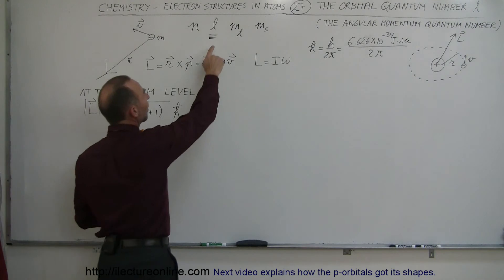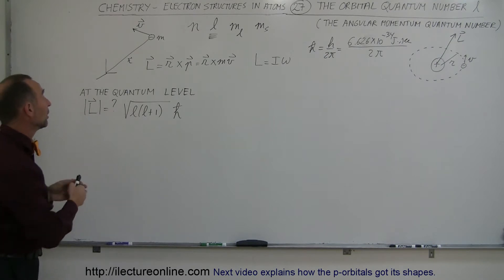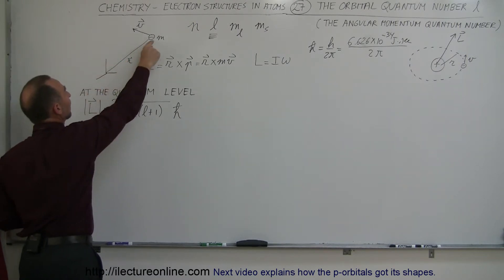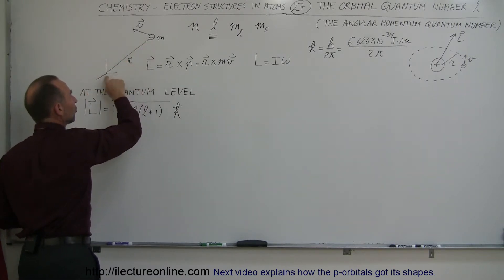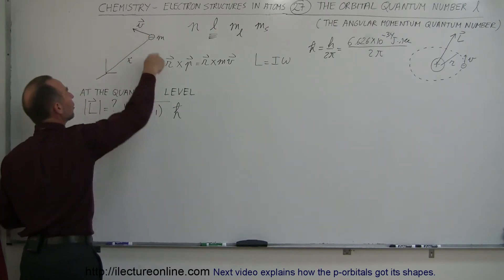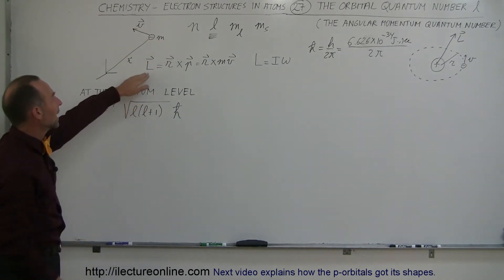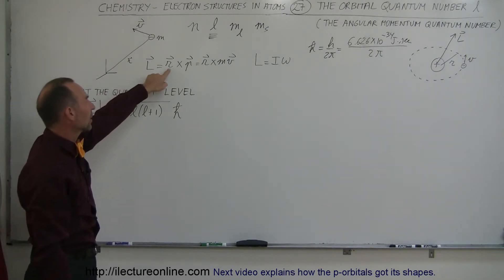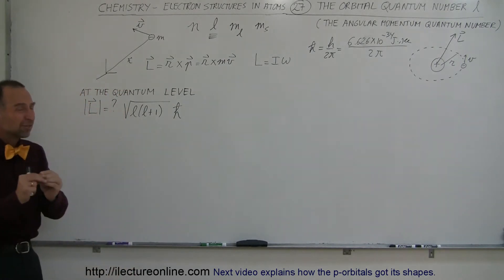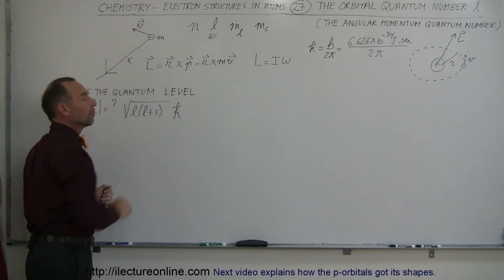Electrons will also have what we call angular momentum. Whenever an object goes around in a circular path around a central point, it does so at a distance R — the position vector. We can determine the angular momentum as the cross product of the position vector and the momentum, which is mass times velocity. For small electrons, though, this classical approach doesn't really work.